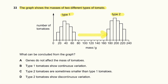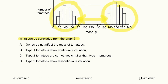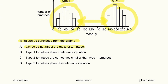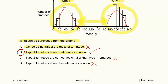Question 33: The graph shows the masses of two different types of tomato — type 1 and type 2 — of different varieties. Genes do not affect mass is completely wrong. Type 1 tomatoes show continuous variation — this is correct because it produces a bell-shaped curve. Type 2 tomatoes are always larger than type 1 is wrong, and type 2 showing discontinuous variation is also wrong. So 33B is the answer.